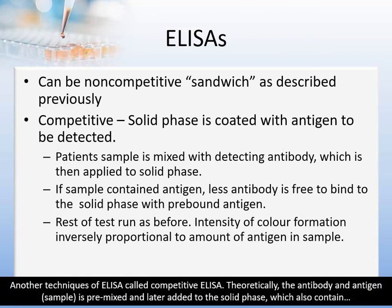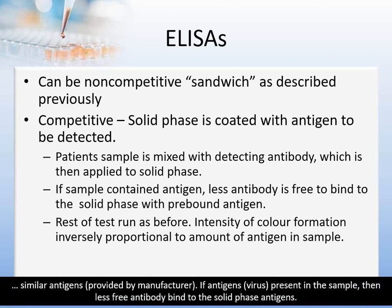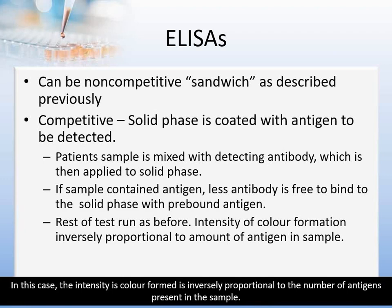Another technique is competitive ELISA. Theoretically, the antibody and antigen from the sample are premixed and later added to the solid phase, which also contains similar antigens as provided by the manufacturer. If antigen or virus is present in the sample, then less free antibody binds to the solid phase antigen. In this case, the intensity of colour formed is inversely proportional to the number of antigens present in the sample.